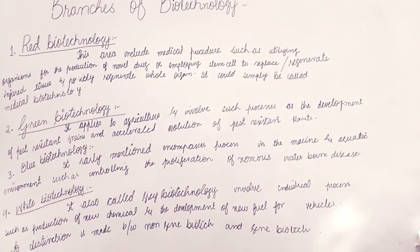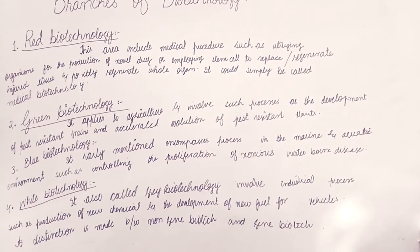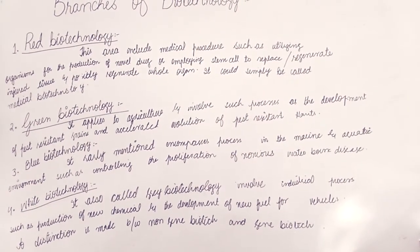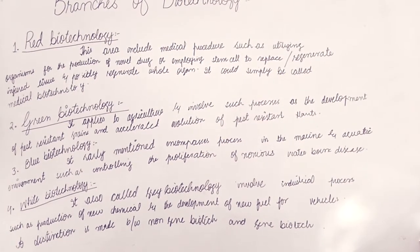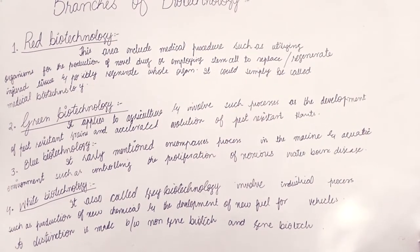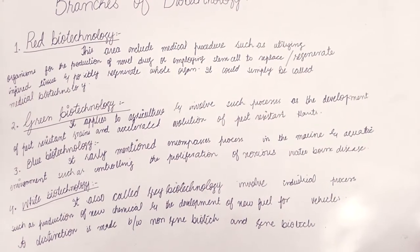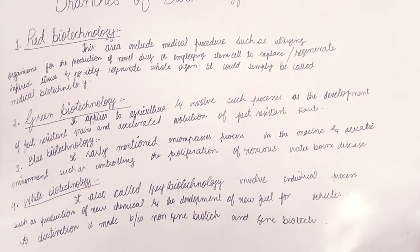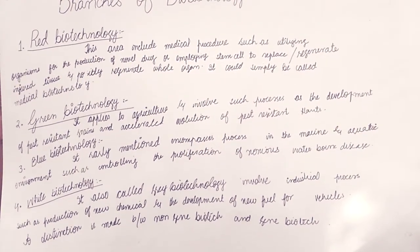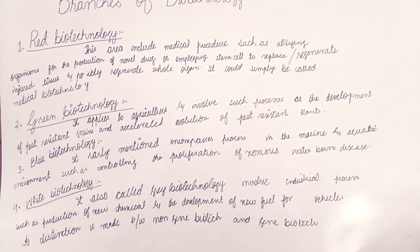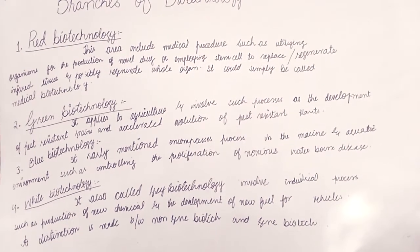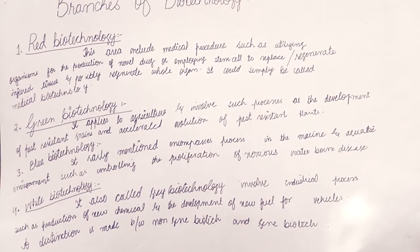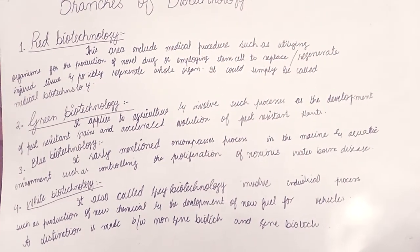Red biotechnology basically refers to medical biotechnology. There are different medical procedures and processes related to the medical system. These organisms help with drug production, and stem cells are undifferentiated cells which have the ability to regenerate whole organs. This is called red biotechnology.